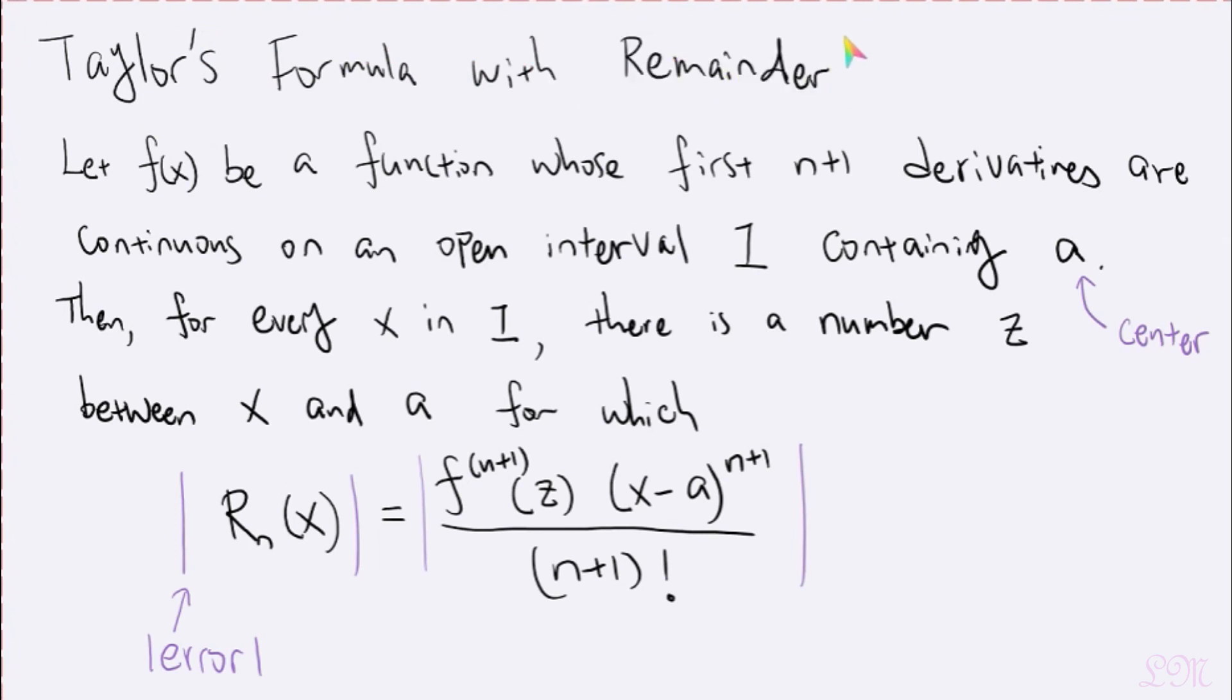this formula is often referred to as Taylor's theorem or Taylor's formula with remainder. And some of you may be like, wait a minute, didn't we just say that? Well, in most cases, we would not be able to find exactly what the remainder is. But how come there is an equal sign here in this theorem?